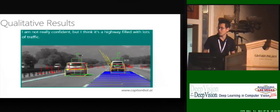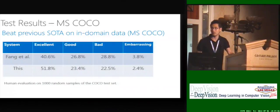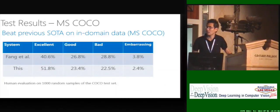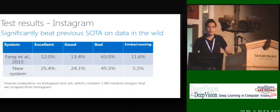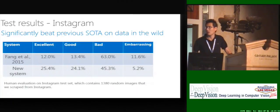Those are qualitative results. We also tested rigorously on two datasets. One is the in-domain data, the MS-COCO data, which we used to train on. We compared to the previous state-of-the-art system, and on the in-domain data our system is better in human judgment. When we tested on the Instagram data, which is the in-the-wild data, the performance gap is even much, much bigger.